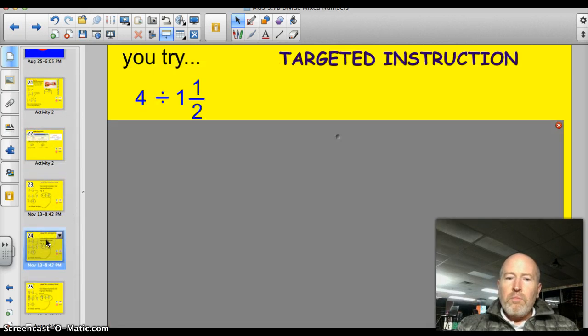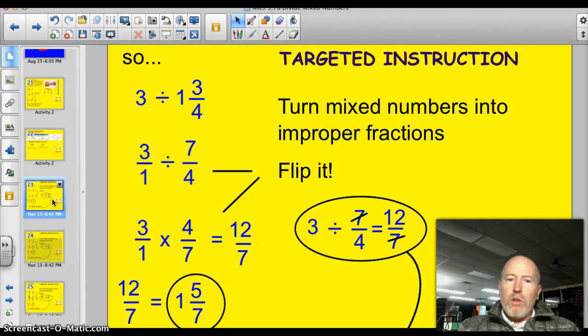Let's work a problem. 4 divided by 1½. You know what, I'm going to start with this one. So, let's take 3 divided by 1¾. The first step here is to turn mixed numbers into improper fractions. So, 3 divided by 1¾. 1 times 4 is 4 plus 3 will give me 7/4. So, now I've rewritten the problem. 3 divided by 7/4 is what I'm working with. Notice how I put that 3 over 1? I like doing that.